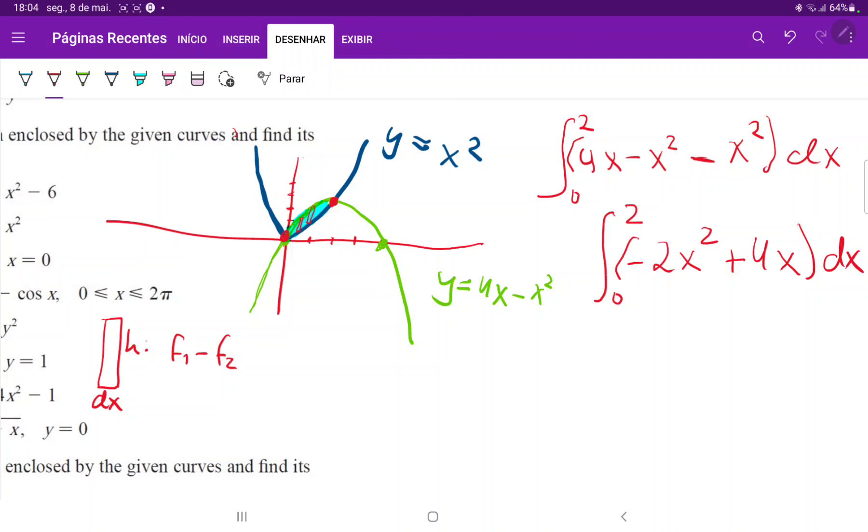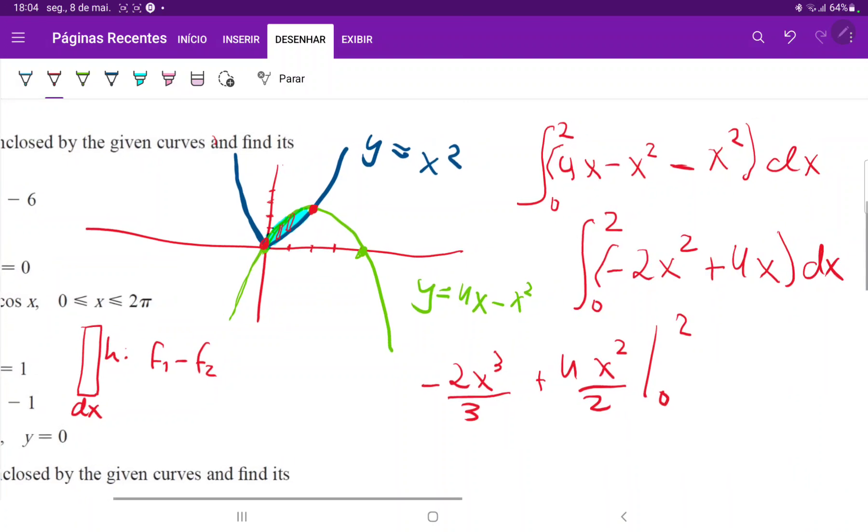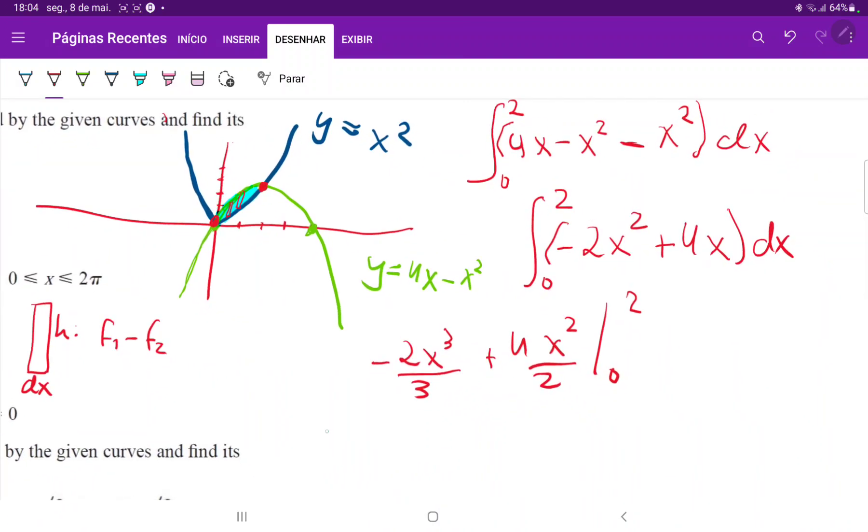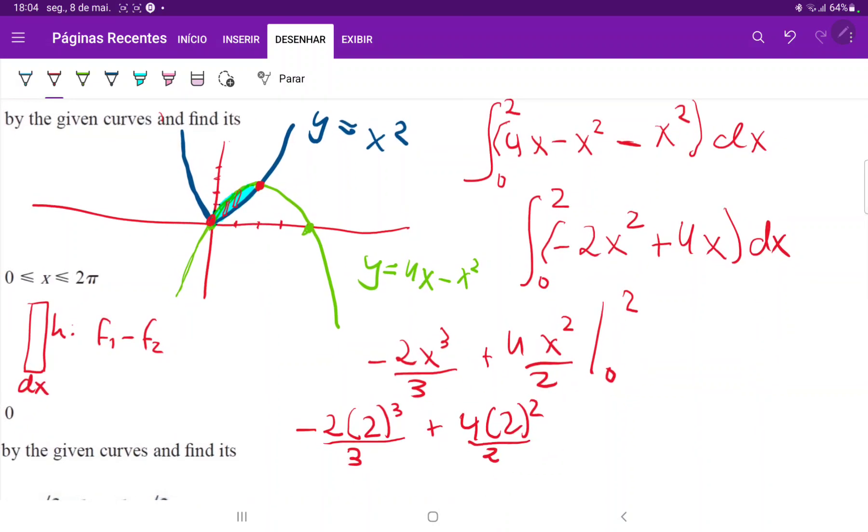So now I'm just going to apply my reverse power rule. So this is minus 2x cubed over 3 plus 4x squared over 2, all from 0 to 2. When we apply our boundaries, this is minus 2 times 2 cubed over 3 plus 4 times 2 squared over 2. And then when we apply the lower boundary, it would just be minus 0 plus 0, because when we plug 0 into x, the terms disappear. So we won't consider the lower boundaries. Now we just have to finish this calculation.